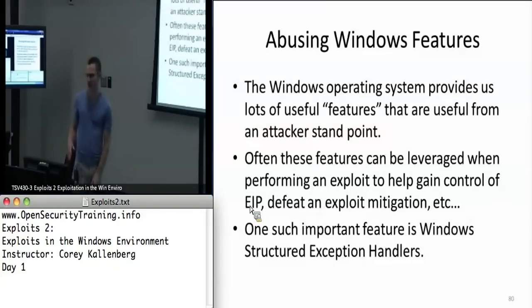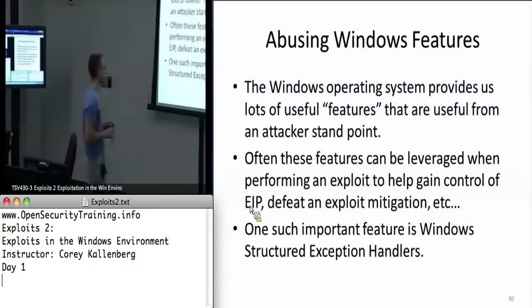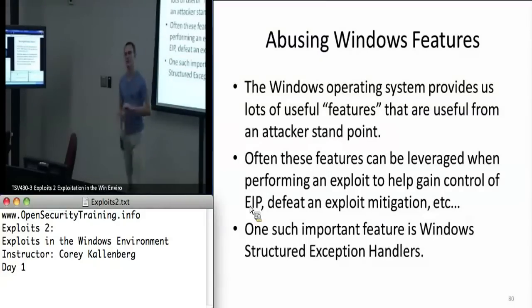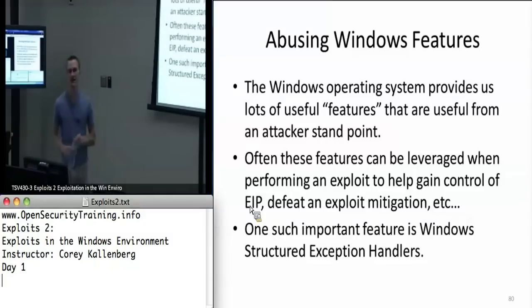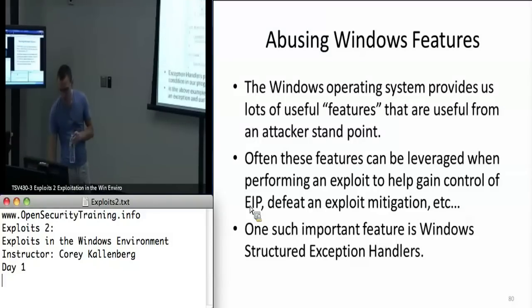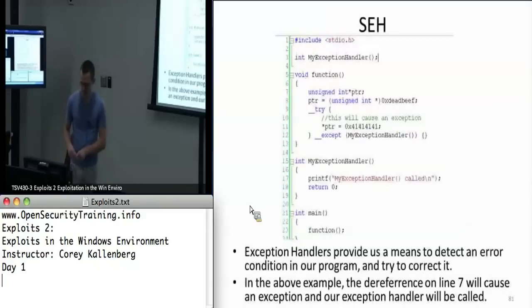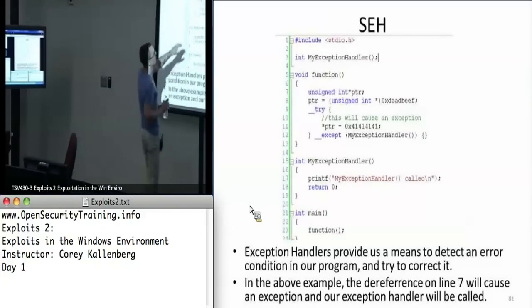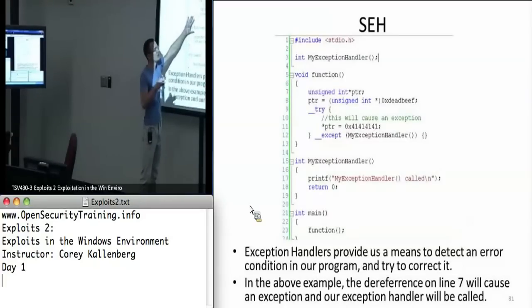The main one you see in Windows stack overflows — pretty much the de facto one — is structured exception handlers, just exception handlers. These are essentially function pointers that exist on the stack that get executed when something bad happens, when an exception happens. When you see a try-catch statement, a lot of times it's using these Windows exception handlers by just putting these function pointers on the stack.